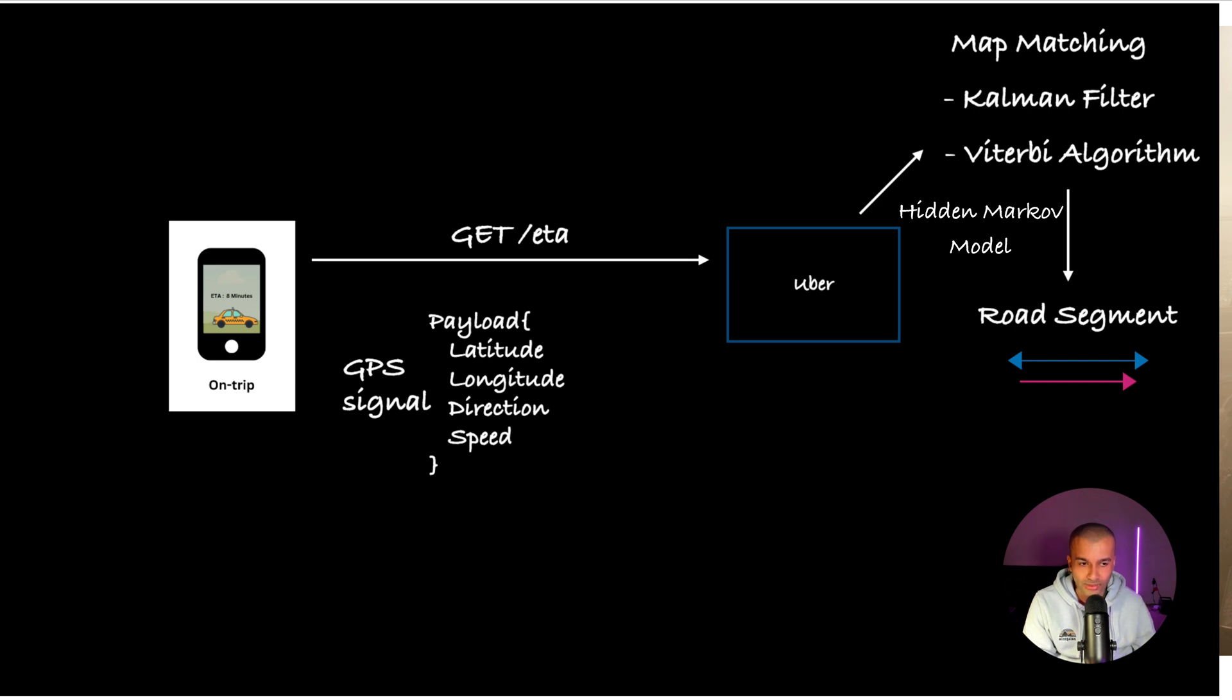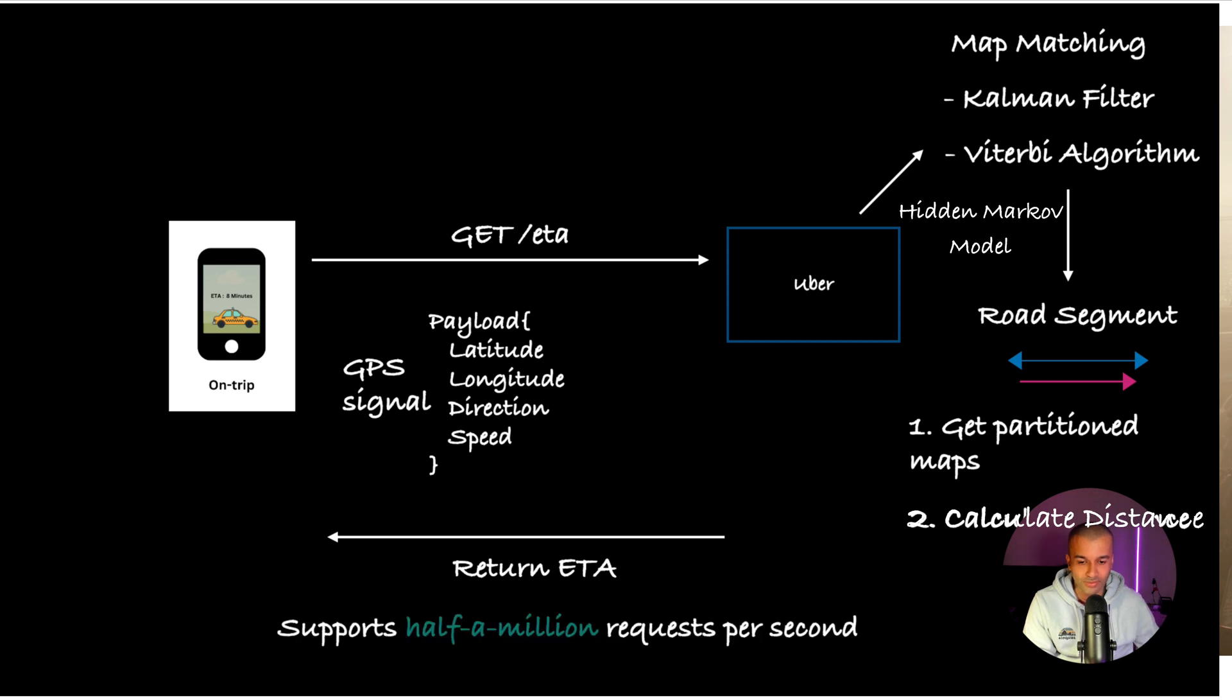Once you have the correct road segment, it's easy to get the partitioned maps and then calculate the distance, and then it returns the ETA back to the client. This model supports over half a million requests per second. This is basically how Uber calculates ETA.